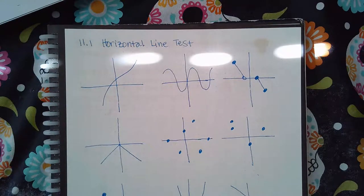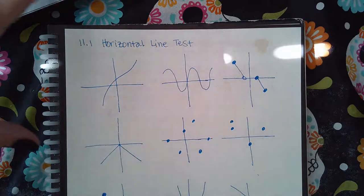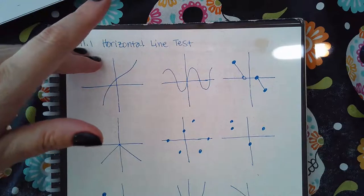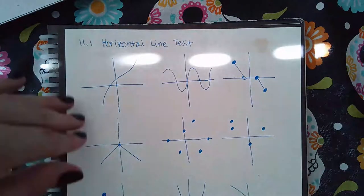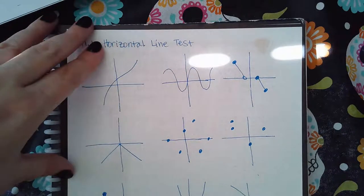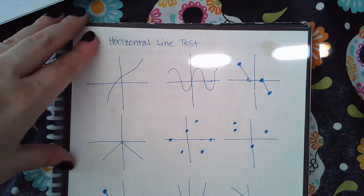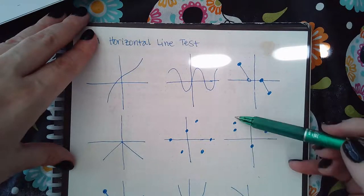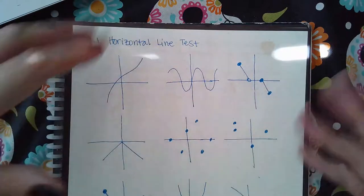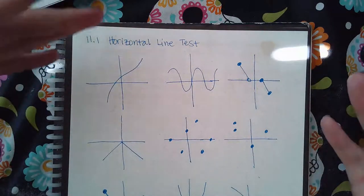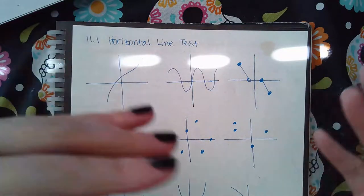What they're asking here is not necessarily whether or not these graphs are functions. What they want to know in this particular topic is whether or not these graphs are one-to-one relationships. Some of them may be functions, and some of them may not be. Every single graph is a relationship, so they want to know which of these relationships are one-to-one.